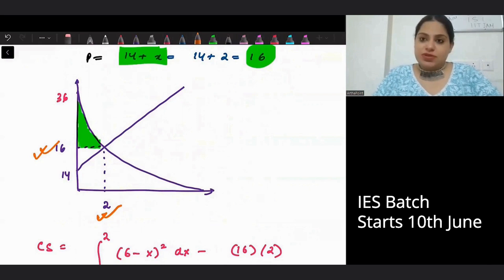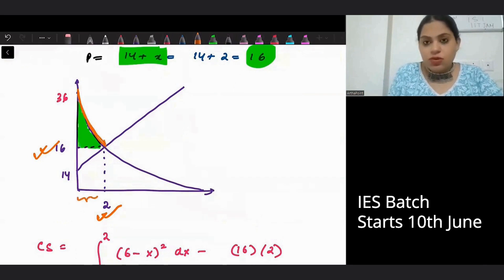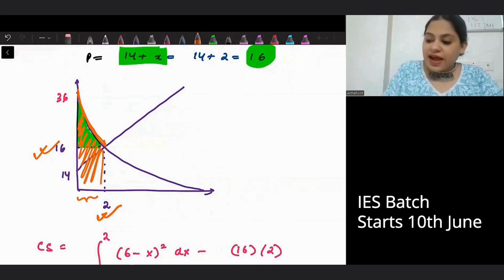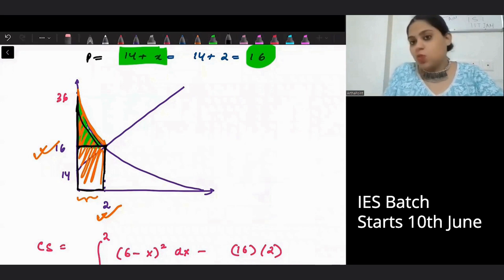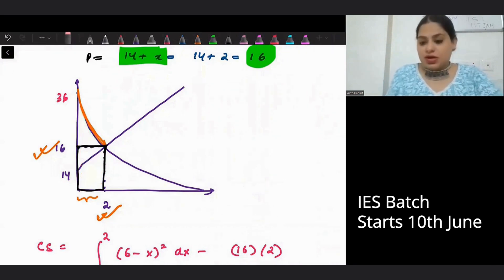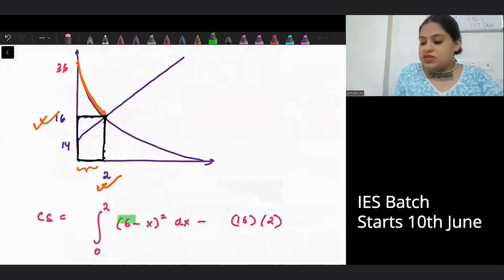Now, I need to find the consumer surplus. How can I find that? Integrate the demand curve from 0 to 2. So you will get this entire area. Subtract this rectangular area. So that you can get this area in between. This is what we want to do.